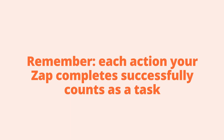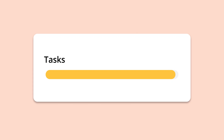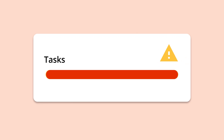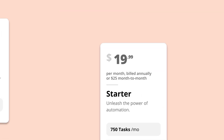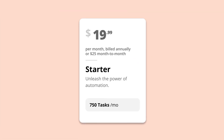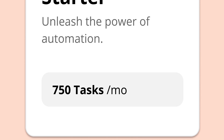Remember, each action your Zap completes successfully counts as a task. When you approach that limit, you'll get an alert. So if you need to automate a large number of processes, make sure you're on a plan that will accommodate those tasks.